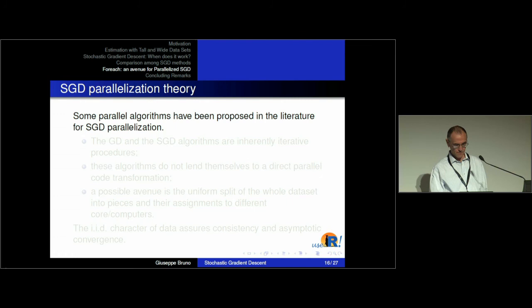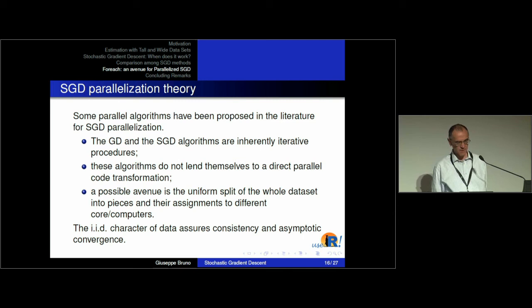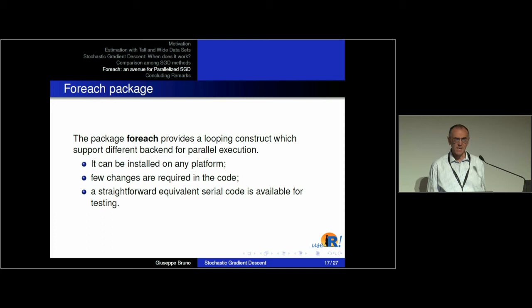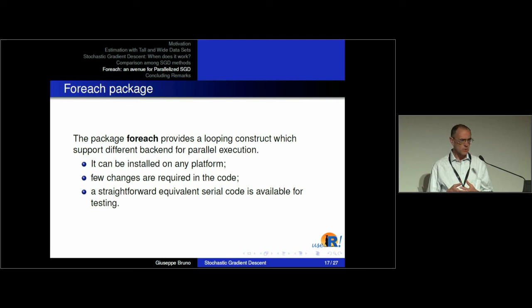For the parallelization, there are already some suggestions in the literature — three or four algorithms have been proposed. I adopted the one proposed in a paper by Zinkevich from Google. I used the foreach package to implement this parallelization in R. The nice thing about this package is that it can be used on any platform — Windows, Linux, Mac OS — and very few changes are required to the original code, making it very easy to implement the parallelization.